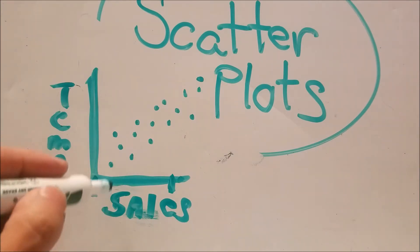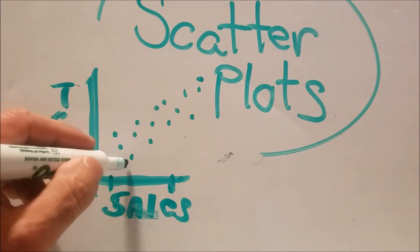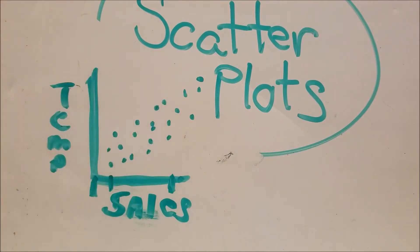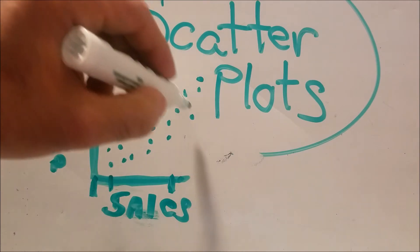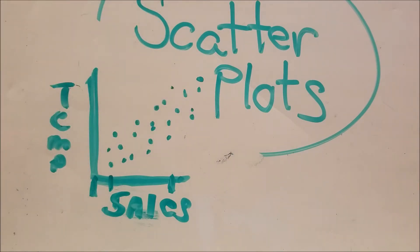So as you can see, there are points on this grid and they're scattered. And the closer they are together, it's a stronger correlation, which we'll talk about.